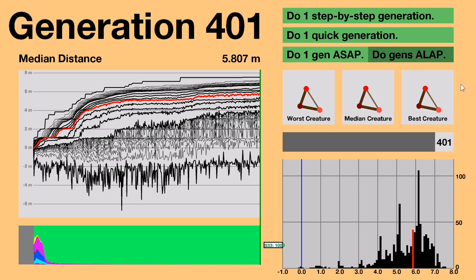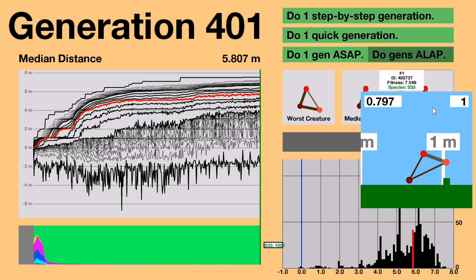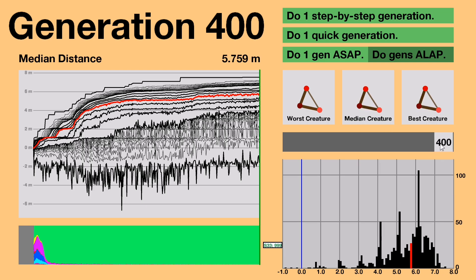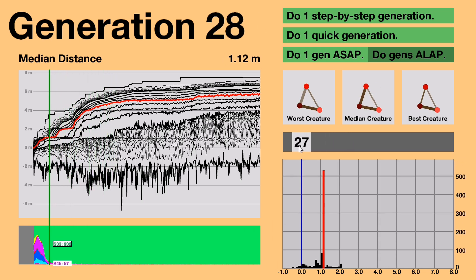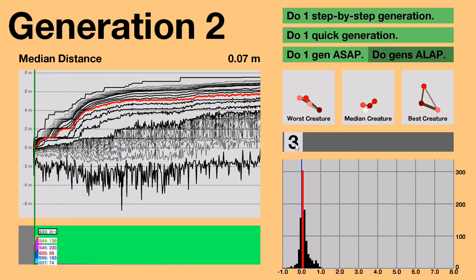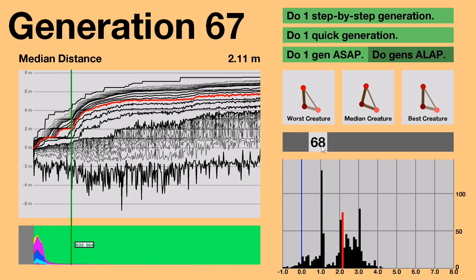So after 400 generations, it looks like the creatures are plateauing out. At this point, all 1,000 creatures are triangles, and almost 90% of them get past 4 meters. I'm a bit surprised that the median didn't catch up with the best like it normally does, but that might be because of how easy it is for a slight modification to make a creature stumble like 5 meters down the road.